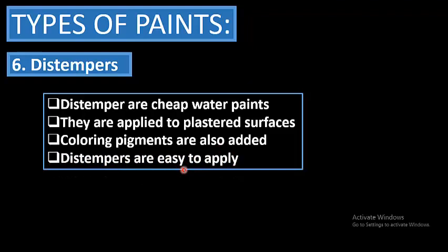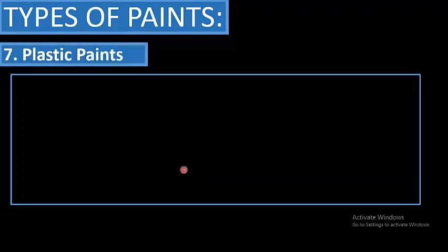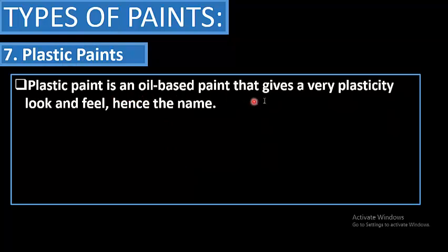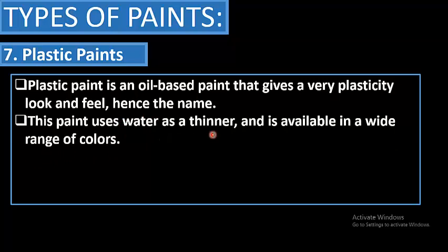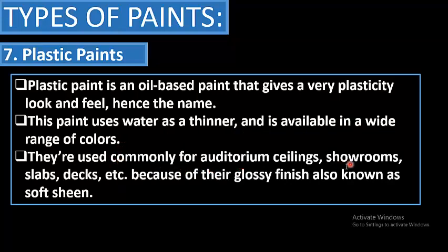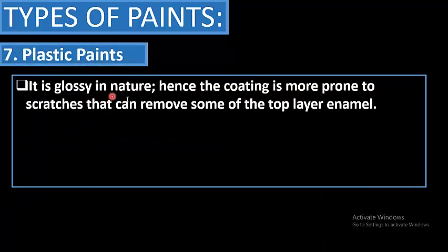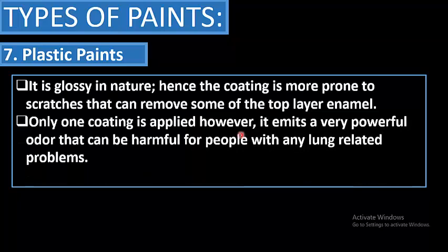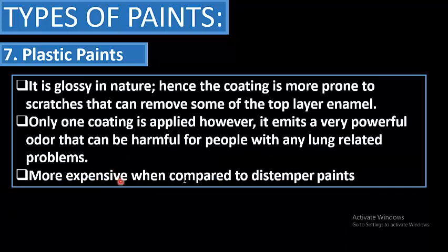The seventh type is plastic paint, an oil-based paint that gives a very plastic look and feel. It uses water as a thinner and is available in a wide range of colors. It is commonly used for auditorium ceilings, showrooms, slabs, and decks because of its glossy finish, also known as soft sheen. Only one coating is applied, but it emits a very powerful odor that can be harmful to people with lung-related problems. It is more expensive than distemper paints.